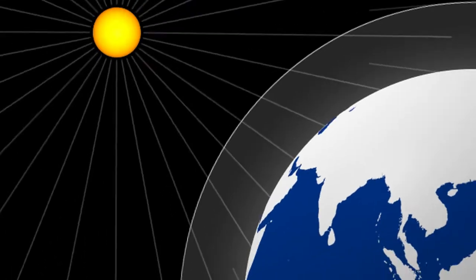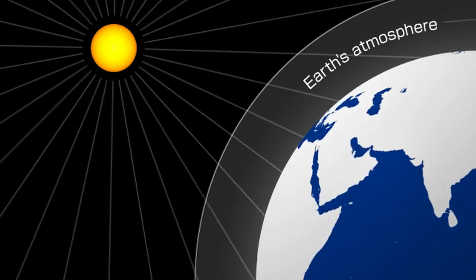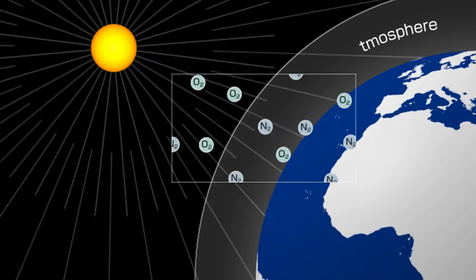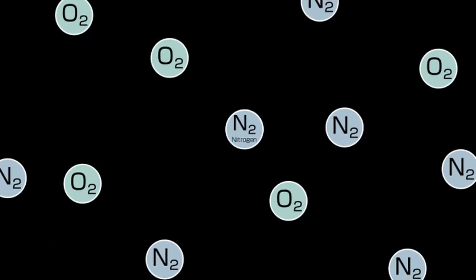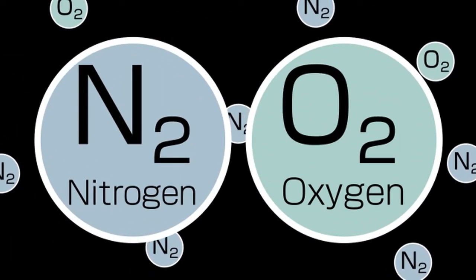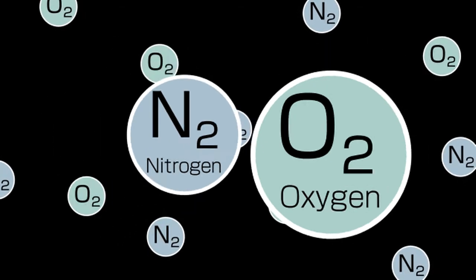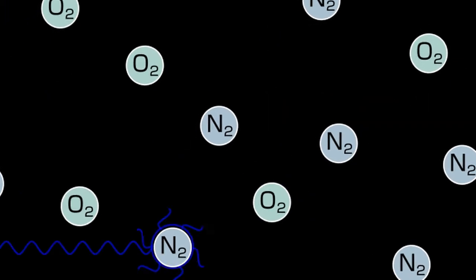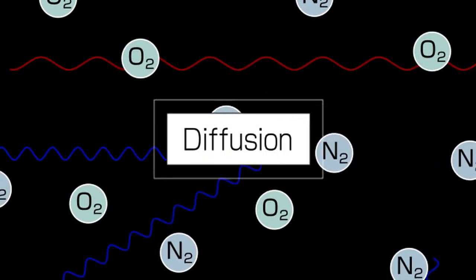Sunlight passes through the earth's atmosphere before it reaches us. The atmosphere comprises gas molecules, including nitrogen and oxygen. The light collides with these molecules and is spread out in all directions. This phenomenon is called diffusion.